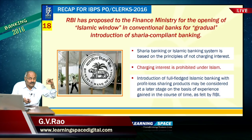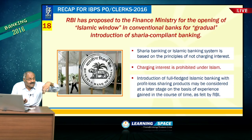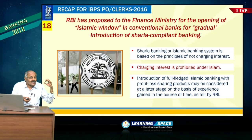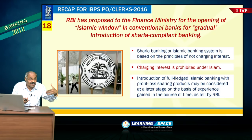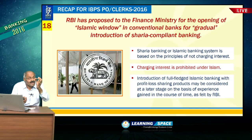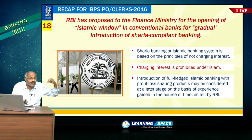RBI has proposed to the Finance Ministry provision of an Islamic window. Under Islamic window — Sharia banking or Islamic banking — interest is prohibited; loss and profit are shared. RBI proposed to open Islamic window branches in conventional banks. The Finance Ministry is yet to give its decision.